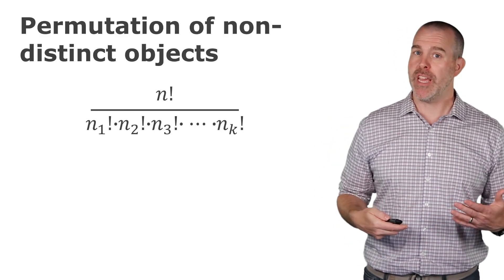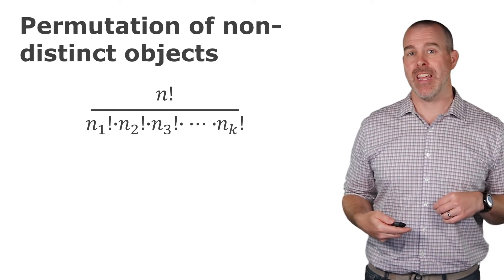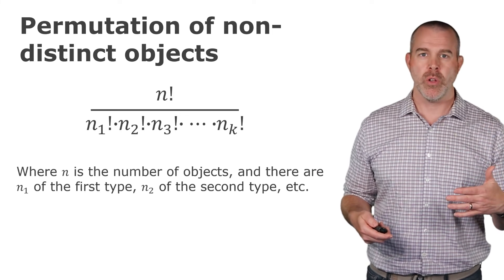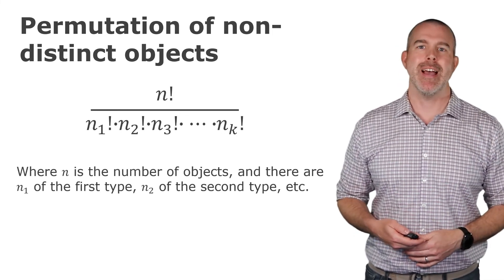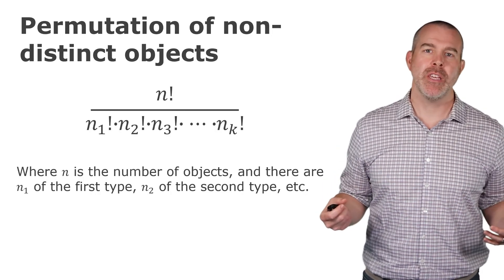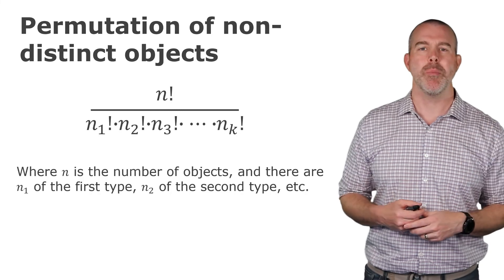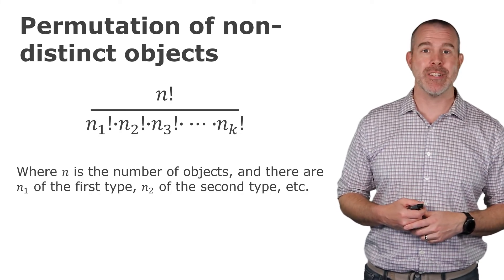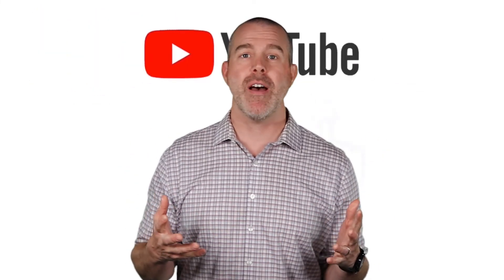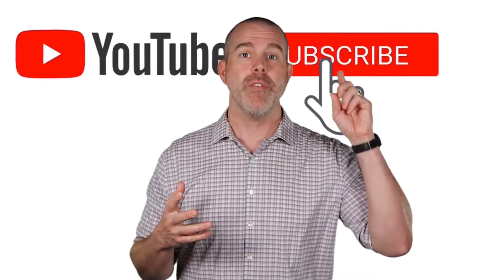And this is a permutation, so it's an ordering of non-distinct objects. And this is assuming here there's n total, and then n1 of the first type, n2 of the second type, etc. Now, that is it admittedly, not a very commonly used one, but it is kind of interesting and one to just kind of add to your tool bag. The permutations and combinations are definitely much more common. All right, that is it for this video. That's some different counting techniques. Hope you found this interesting. If you're interested in seeing more of these, you can subscribe, hit the bell to get notified. There's a whole series of these coming out.